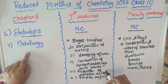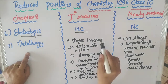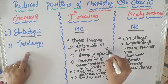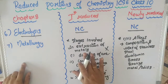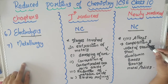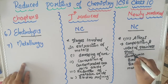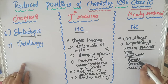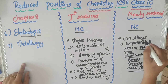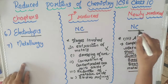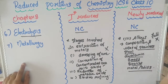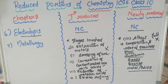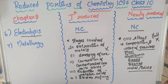In the latest reduction for Metallurgy, the entire Alloys topic has been completely removed. This includes composition and uses of stainless steel, duralumin, brass, and other metals and alloys — all fully removed.